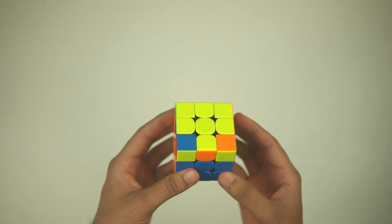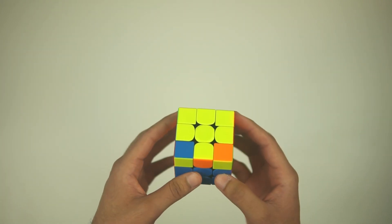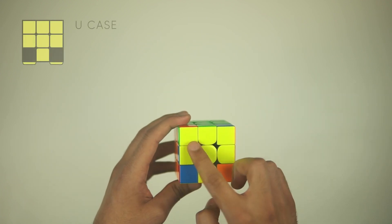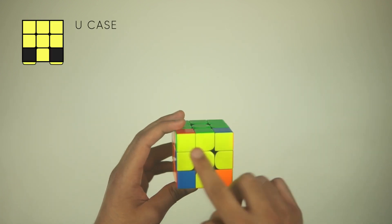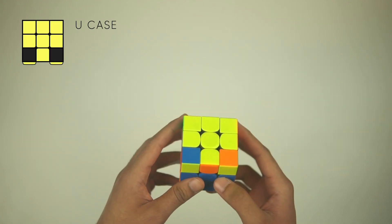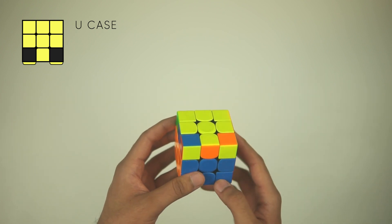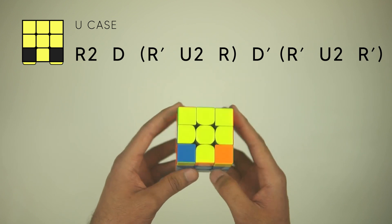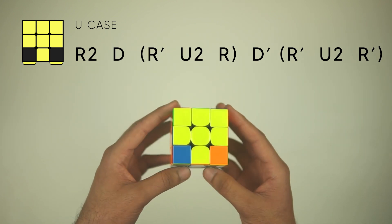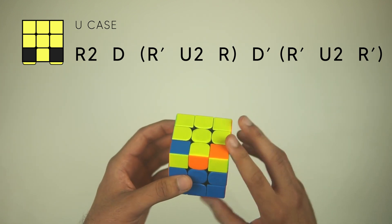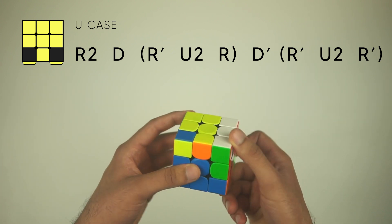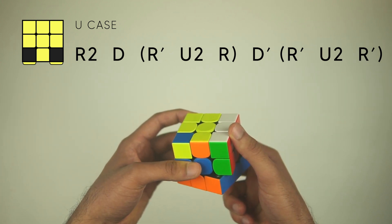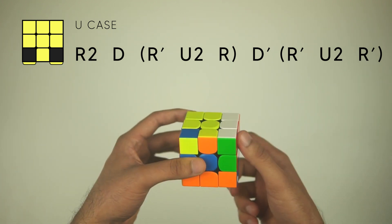Finally, we have the U case. This one is slightly longer, but you recognize it—it looks very similar to the T case with the two OLL corners solved, but then here we have headlights instead of them being on opposite ends. And we're going to hold it like this with the headlights facing you, and what we're going to do is an R2, D—it's kind of hard to see, but you move this layer over.